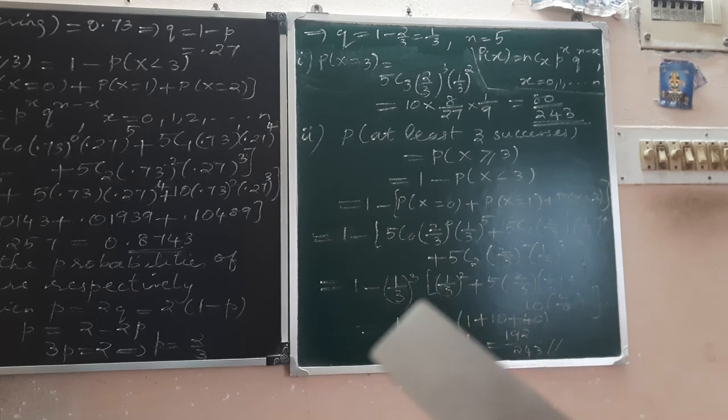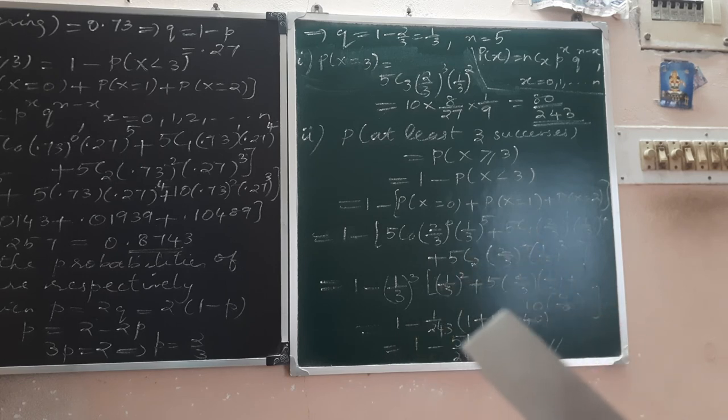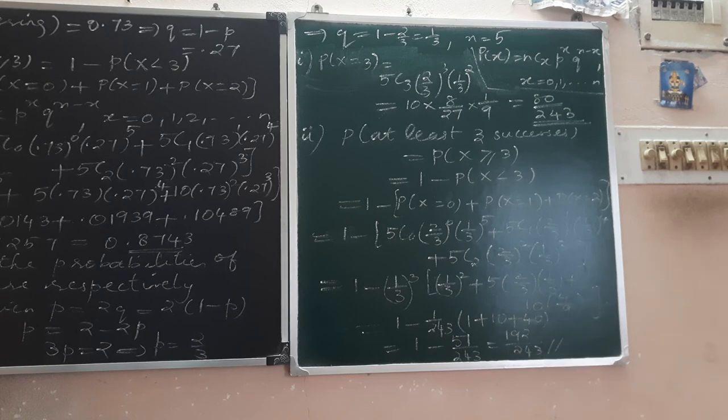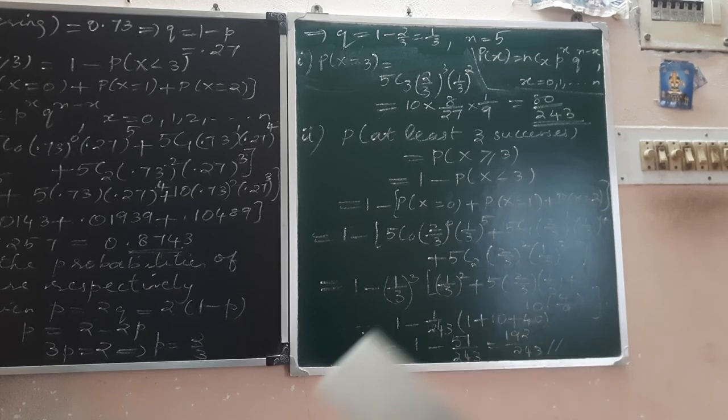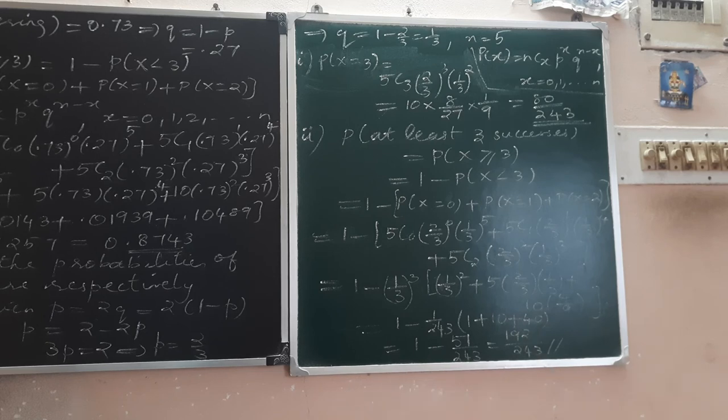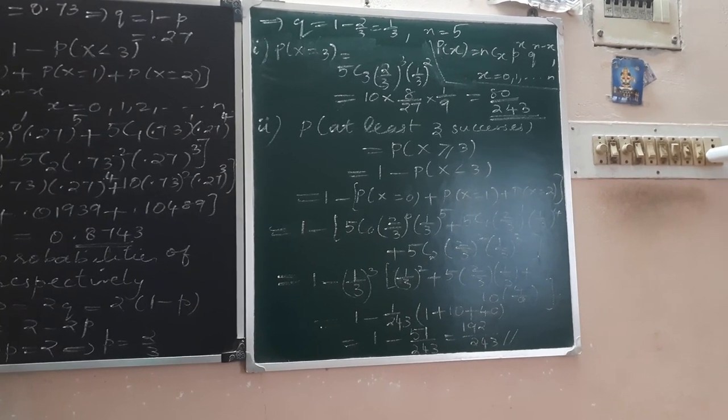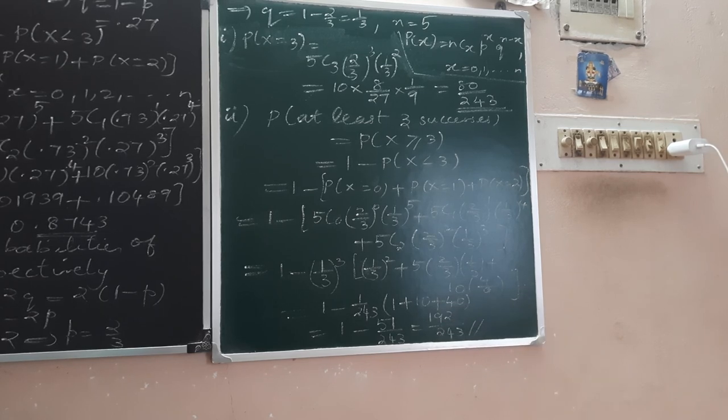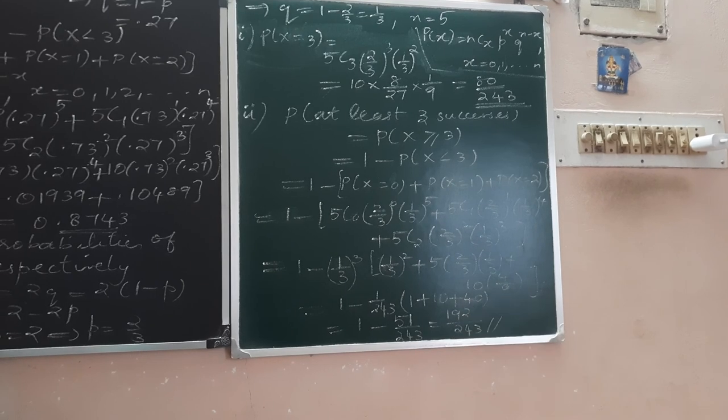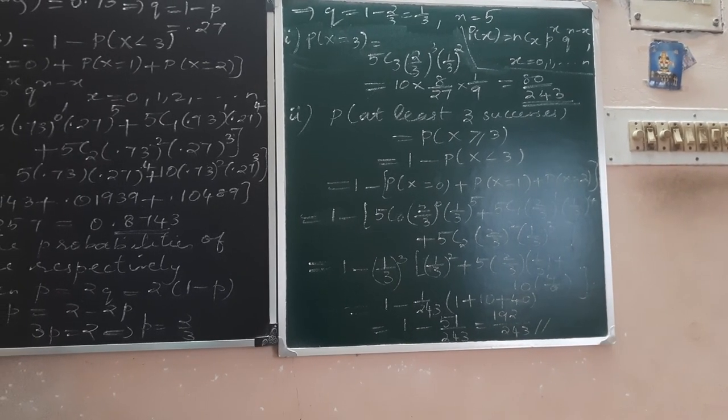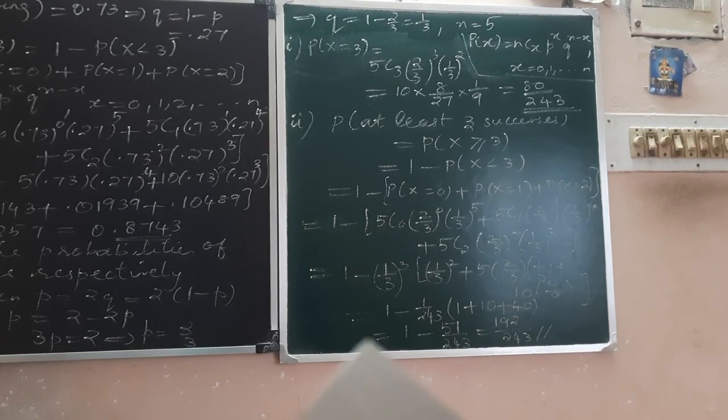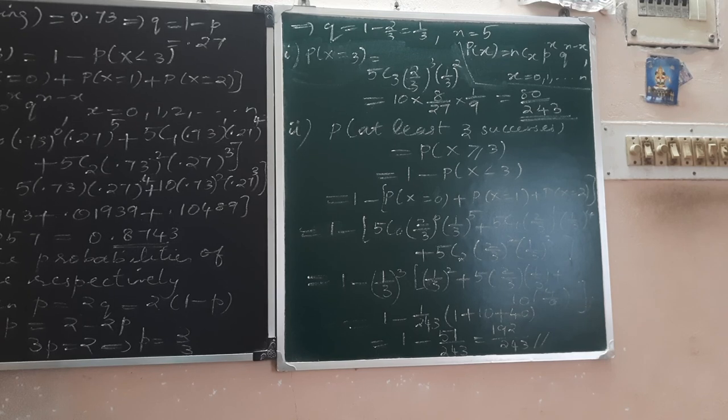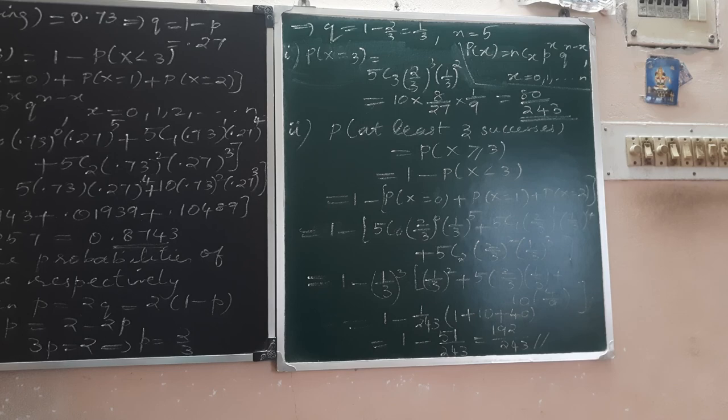Simplifying, this equals 1 minus [1 by 3 power 5 plus 5 times 2 by 3 times 1 by 3 power 4 plus 10 times 4 by 9 times 1 by 27]. The bracket equals 1 plus 10 plus 40, which is 51 by 3 power 5, which is 51 by 243. So the result is 1 minus 51 by 243, that is 192 divided by 243.